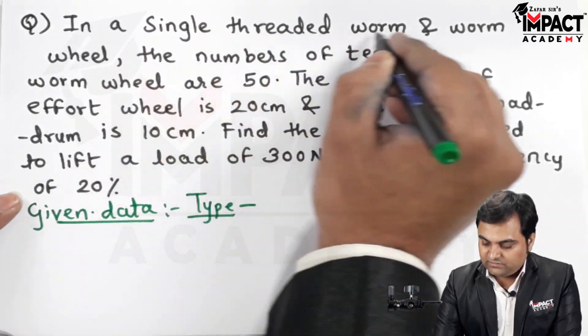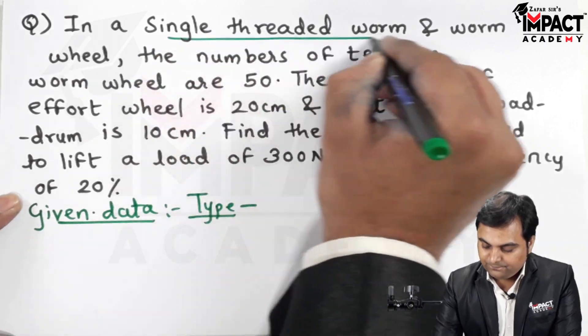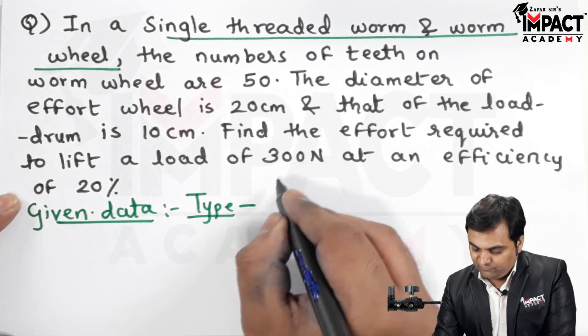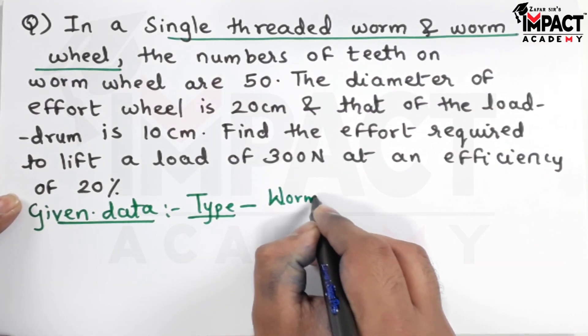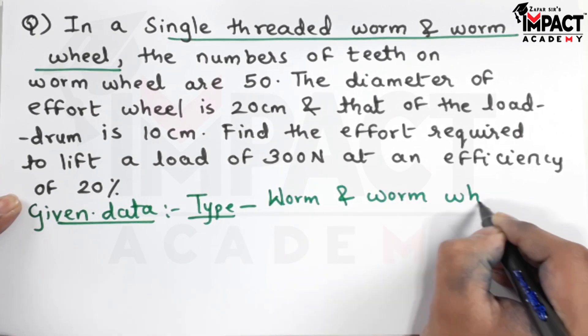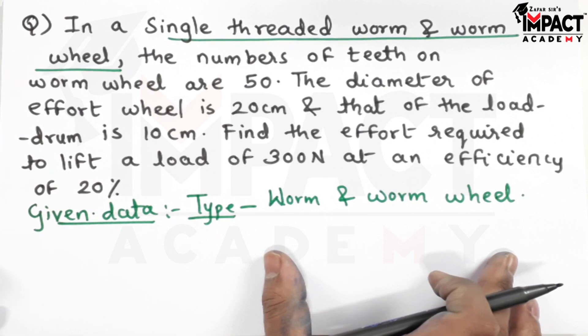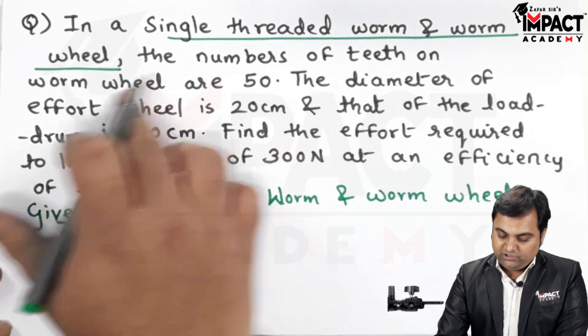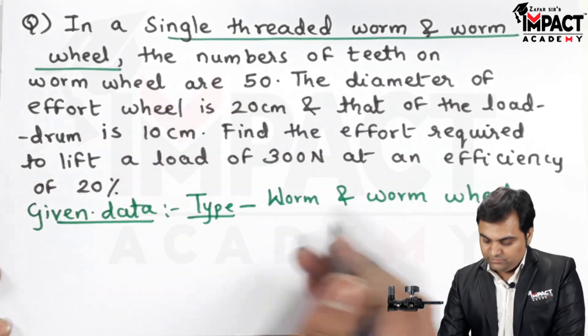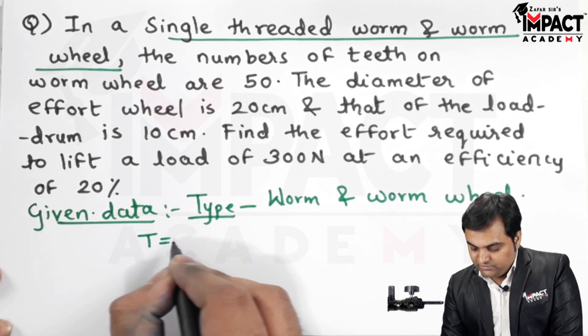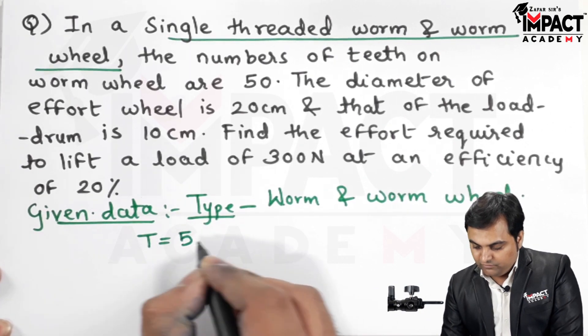It is given that in a single threaded worm and worm wheel, so the type of machine is worm and worm wheel. This problem is specific, it belongs to only worm and worm wheel. The number of teeth on the worm wheel are 50, so the number of teeth is denoted by capital T on the worm wheel, that is 50.